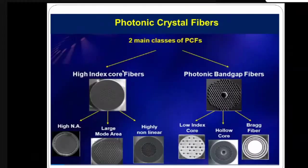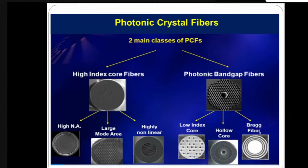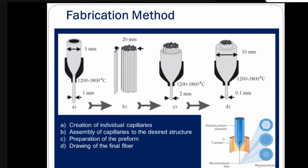There are two classes of PCF: high index core fibers, where the core is solid, and photonic band gap fibers, where the core is hollow or air. Depending upon the geometry, high index core fibers are further divided into high numerical aperture PCF, large mode area PCF, and highly non-linear PCF. Photonic band gap fibers are further divided into low index core photonic band gap fibers, hollow core photonic band gap fibers, and Bragg fibers. Depending upon the application, we can use various types of PCF.